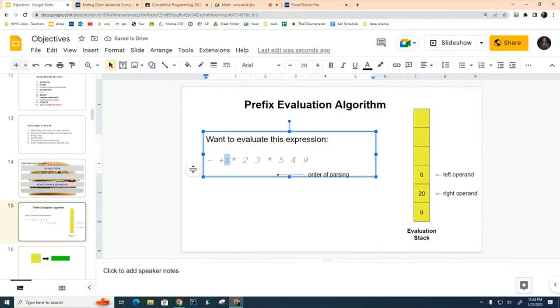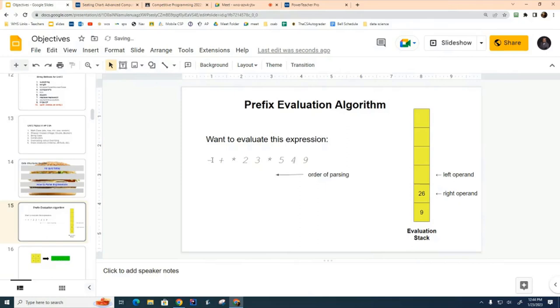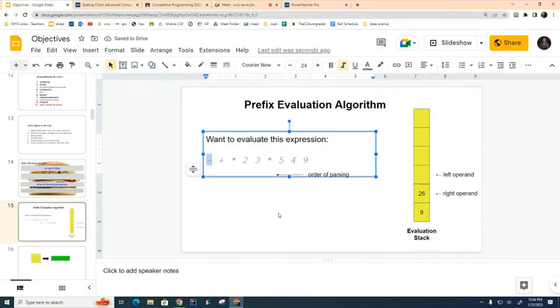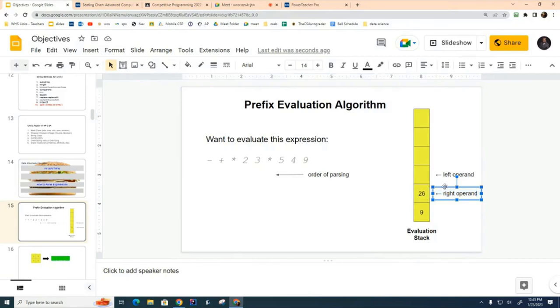Now we have a plus sign. What should we do with the plus sign? I'm going to get 26. So I'm going to remove the 20 and the six and push 26. Finally, I have a subtraction sign. Should I do 26 minus nine or nine minus 26? It's going to be 26 minus nine because the first thing that I pop is always the left operand, and the second number that I pop is always the right operand. So now I do 26 minus nine.